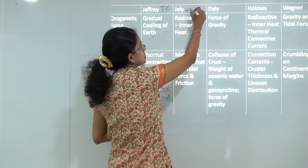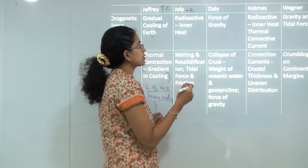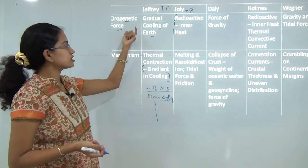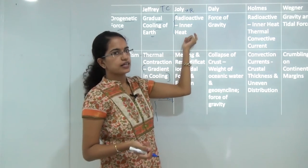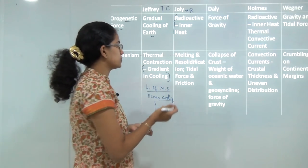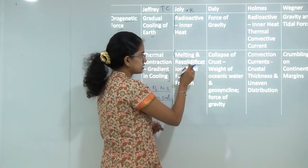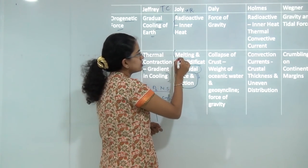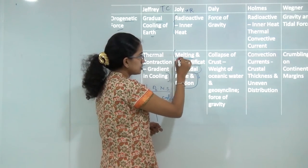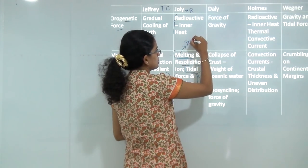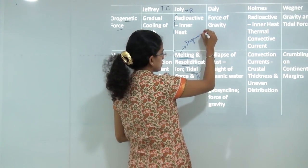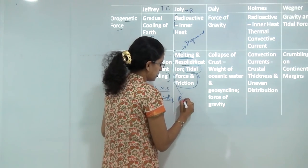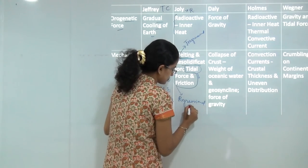The next was Jolly's radioactive theory for mountain building. He explained that radioactivity or inner heat is the orogenetic force that led to mountain building, which was also one of the basic criticisms of this theory. He focused on melting and re-solidification, explaining that melting leads to transgressional seas and re-solidification causes contraction and the uprising of mountains - the regressional phase.